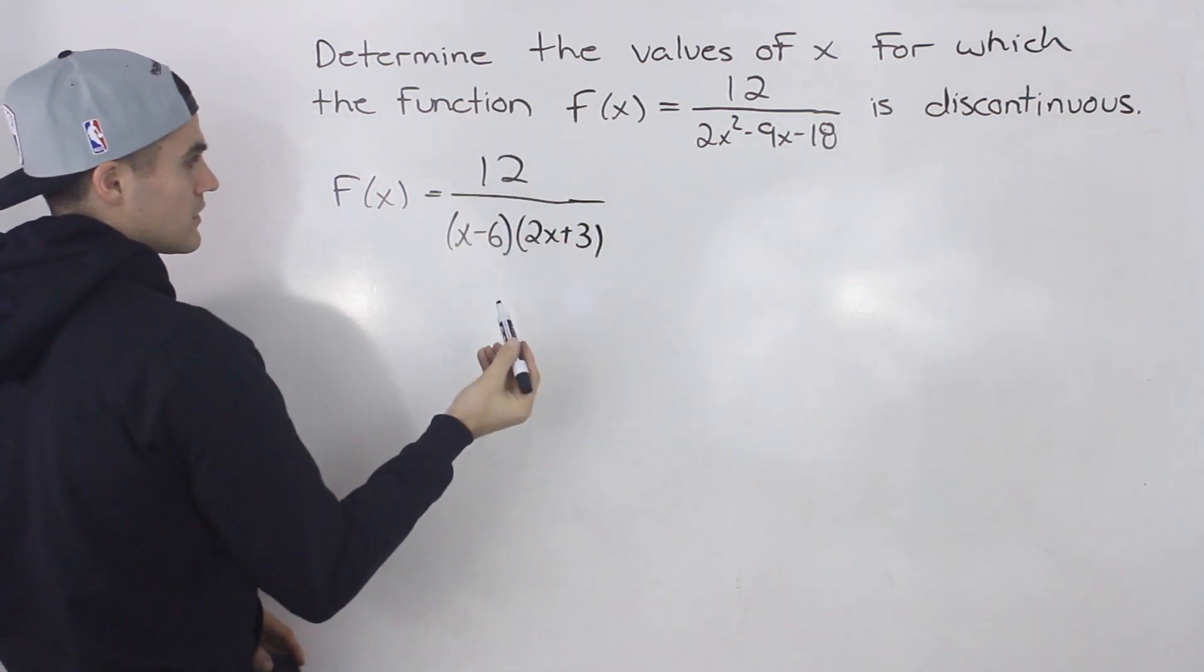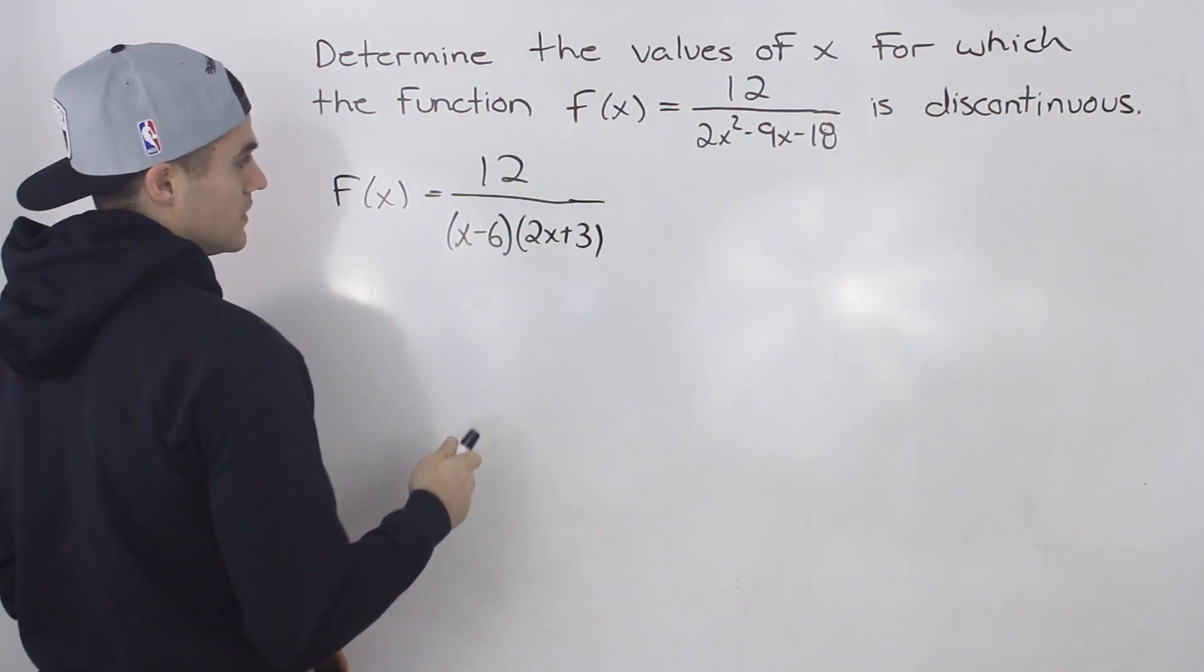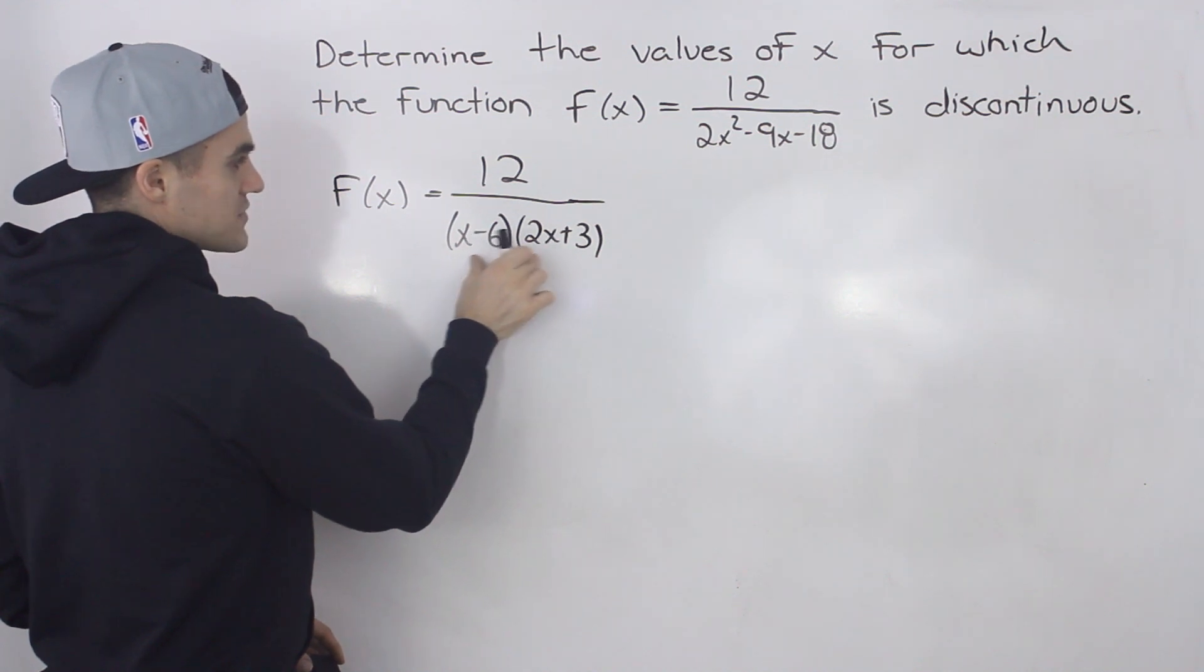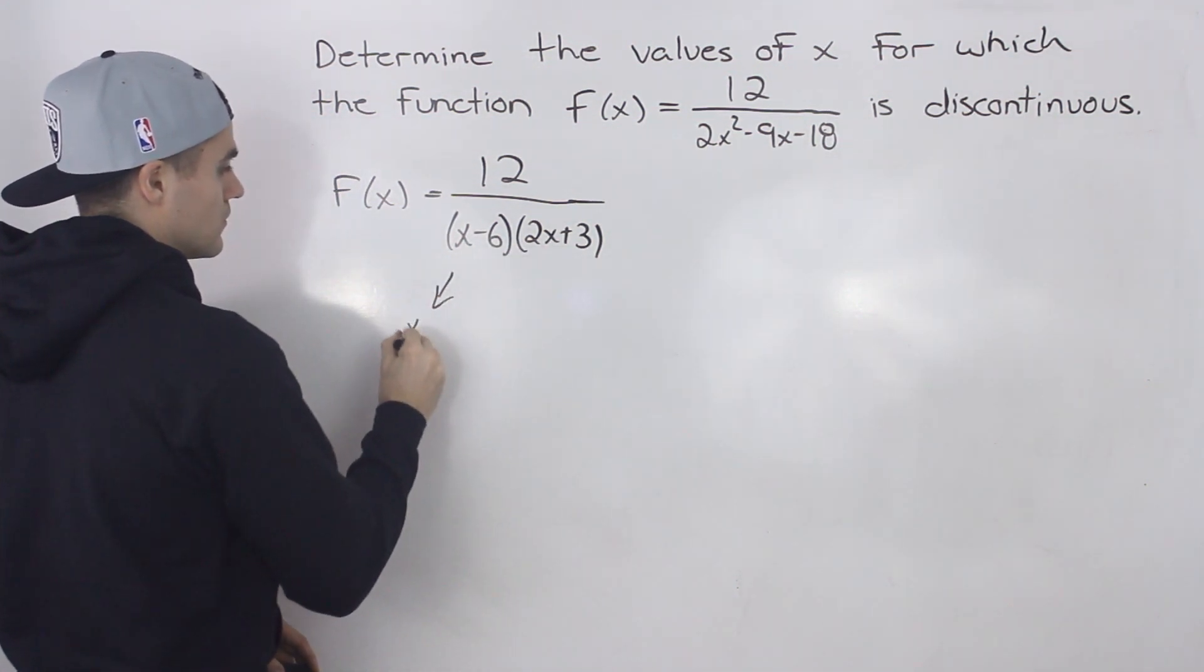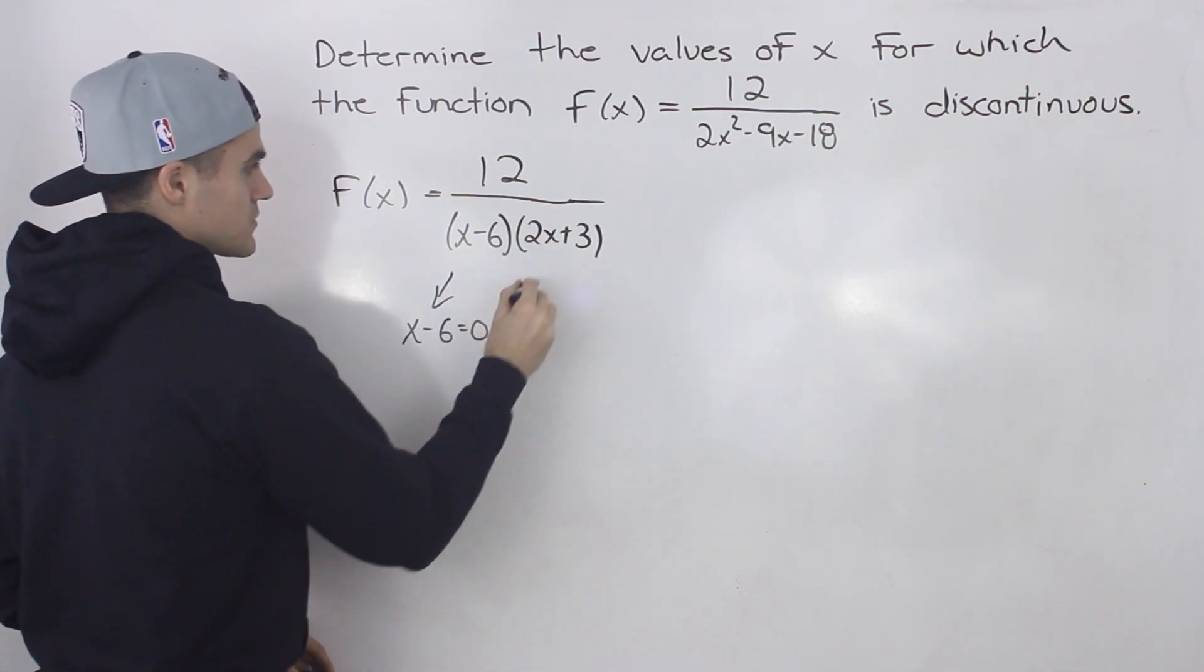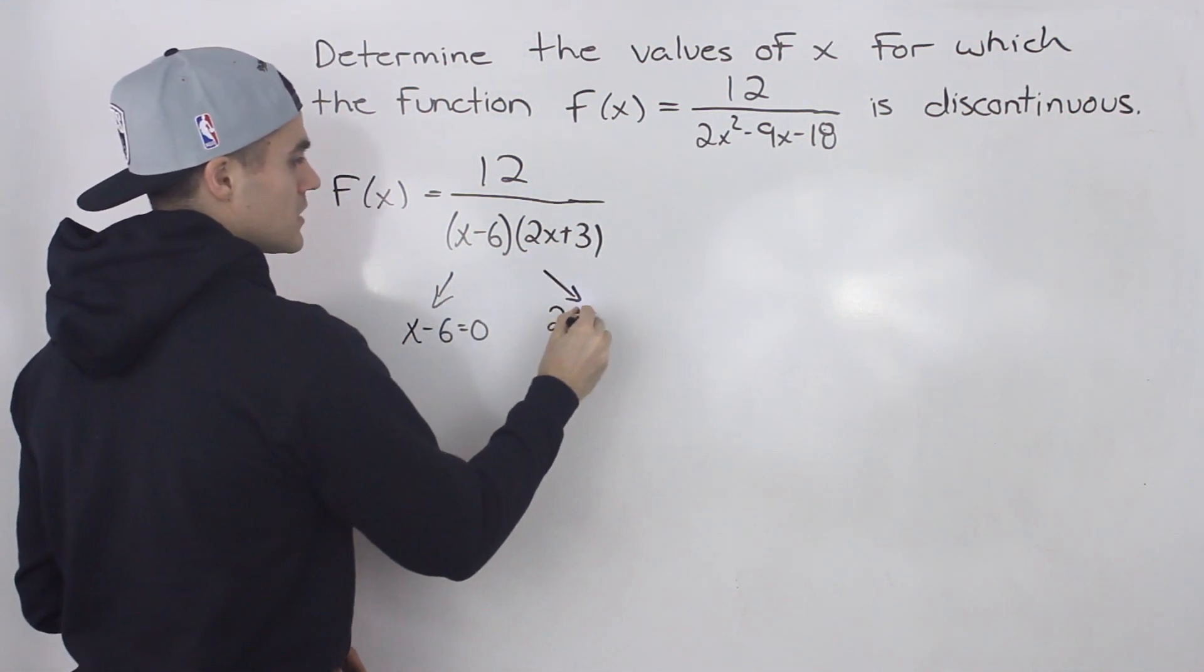Notice that there's nothing here that is canceling out. So for the x values that make the denominator zero, either when x - 6 = 0 or 2x + 3 = 0,